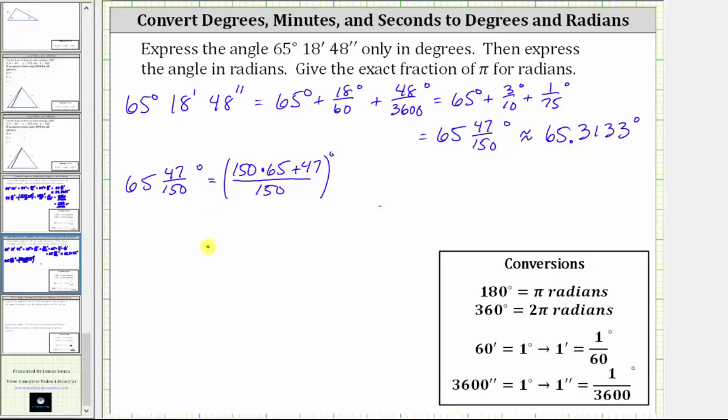150 times 65 is equal to 9,750, plus 47, which gives us 9,797. So we can express the angle as an improper fraction as 9,797/150ths degrees. And now to convert from degrees to radians, we multiply by pi over 180 degrees.